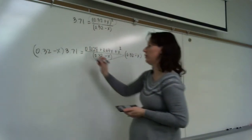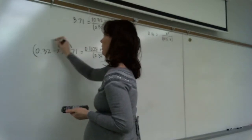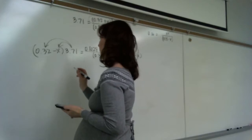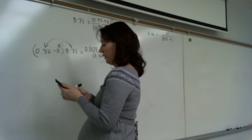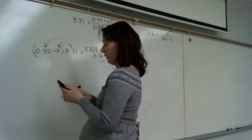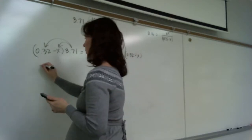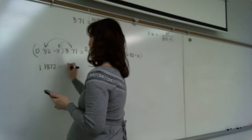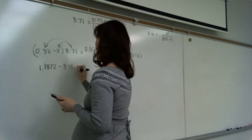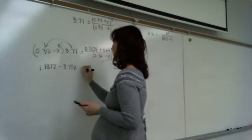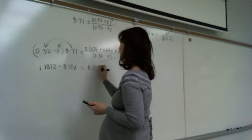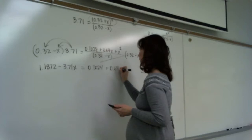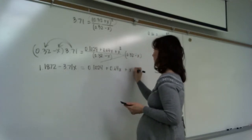Now we distribute. On this side of the equation: 0.32 times 3.71 gives 1.1872, minus 3.71x. That equals 0.1024 + 0.64x + x².